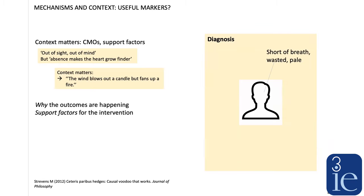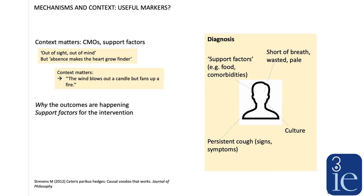We can think about this in another way by thinking about what doctors do in diagnosis. A doctor seeing somebody who's ill doesn't try to map out everything about what's wrong with the person and run a whole battery of tests. They start by trying to find markers for the contexts where the interventions they have to choose from will be effective. A doctor wants to choose the drug or treatment that's going to be effective, and to know whether it'll be effective they need to know why the outcome is happening and the support factors for delivering the drug — and they also look at wider population context, for example adjusting decisions during a COVID-19 epidemic.